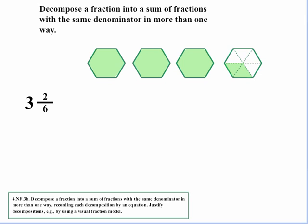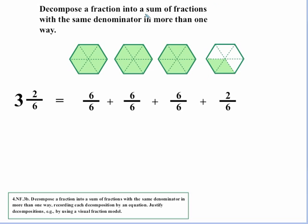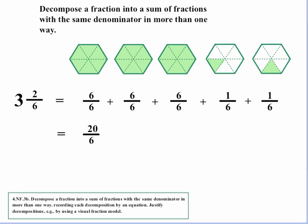Now let's apply decomposing to a mixed number — it works the same way. Here we have 3 and 2/6: the 3 breaks up into 1 plus 1 plus 1, and then we have the fraction 2/6. If we convert all the 1s into 6/6 each, we get the accompanying diagram and equation. We can further break the 2/6 into 1/6 plus 1/6, and by counting the students can tell there's a total of 20/6, or actually 21/6 once all parts are counted.